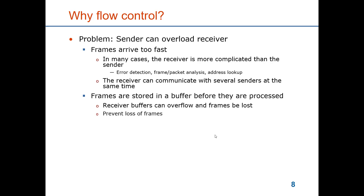Well, the receiver is more complicated than the sender. It has to check frames to see whether they are correctly received, and it might have to do other functions such as looking up addresses for demultiplexing. Also, one receiver can communicate simultaneously with several senders, and together they may overload the receiver. So there has to be a means for the receiver to stop an individual sender from sending frames, and this is what flow control is all about.